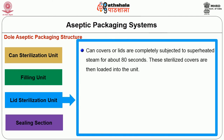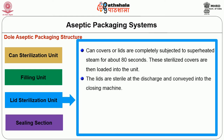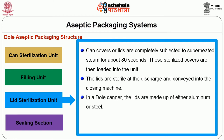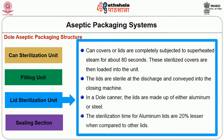The next fundamental unit is the lid sterilizer. Can covers or lids are completely subjected to superheated steam for about 80 seconds. These sterilized covers are then loaded into the unit. The lids are sterile at discharge and conveyed into the closing machine. In a Dole canner, the lids are made up of either aluminum or steel. The sterilization time for aluminum lids is 20% lesser compared to other lids.